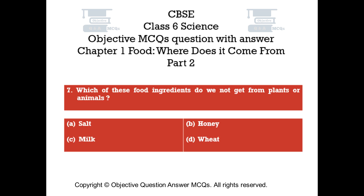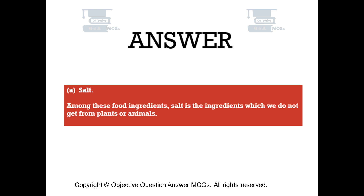Question number 7. Which of these food ingredients do we not get from plants or animals? Option A: Salt. Option B: Honey. Option C: Milk. Option D: Wheat. The right answer is Option A. Among these food ingredients, salt is the ingredient which we do not get from plants or animals.